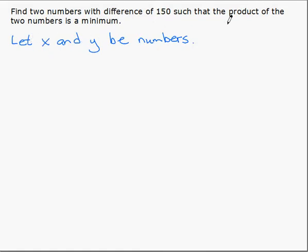The product is the function we're trying to minimize so we need an equation for that function. We can say the product, so our function will be p, is x times y.